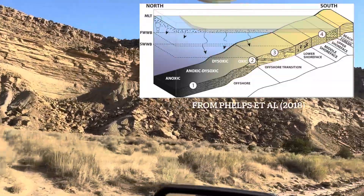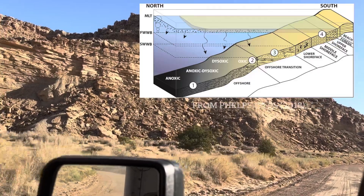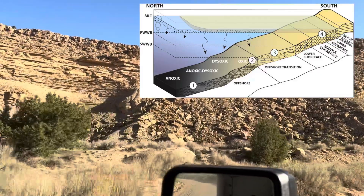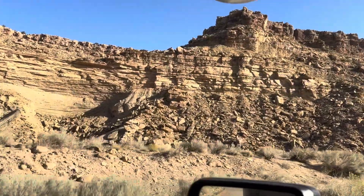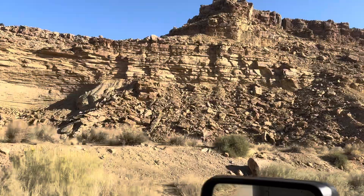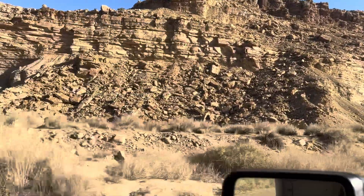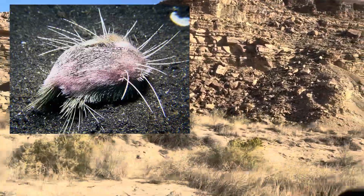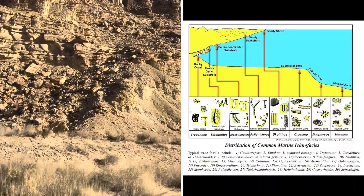As you move upslope from the ocean basin, the grain size on the shore face increases from muds and silts offshore to very fine and fine-grained sands on the beach. And there's a ton of invertebrate life that lives in and on the shore face — everything from worms and shrimp to crabs and bivalves, sea cucumbers and other echinoderms, all sorts of little things that leave really great trace fossils that get preserved in the rock record.